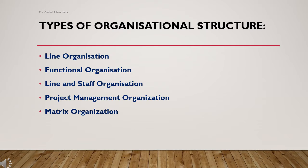First is line organization. In this, authority flows from superiors to their subordinates, and those subordinates give commands to their subordinates, forming a hierarchy. The highest authority lies with the top-most executive and is reduced at each successive level down the organizational scale. It is one of the most commonly used structures, as it is easy to understand and implement, and has been used since past decades.